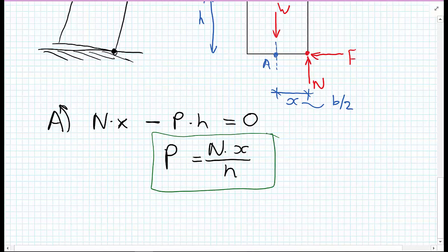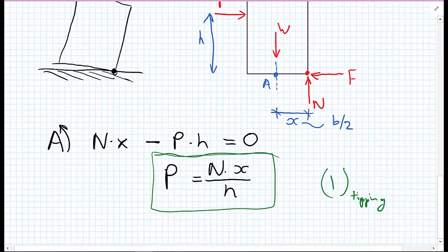I'll put a green box around this. This isn't a formula you can apply to every problem, as we see as we go on to further problems. But we have a formula here, and this is the tipping formula that would get us a value of the load P required to get this box to tip.